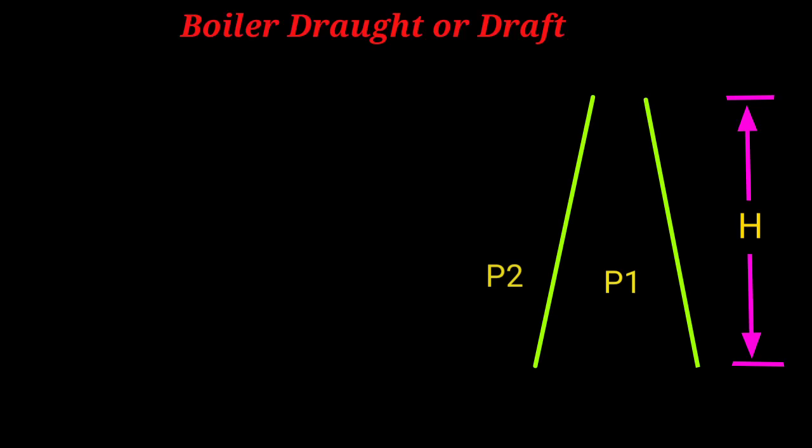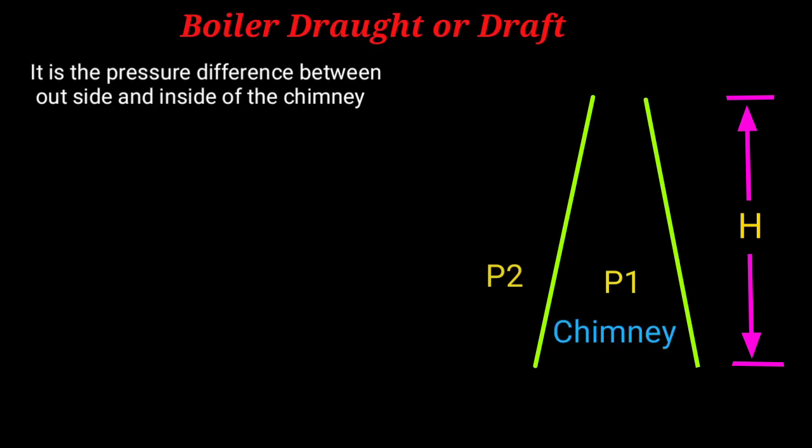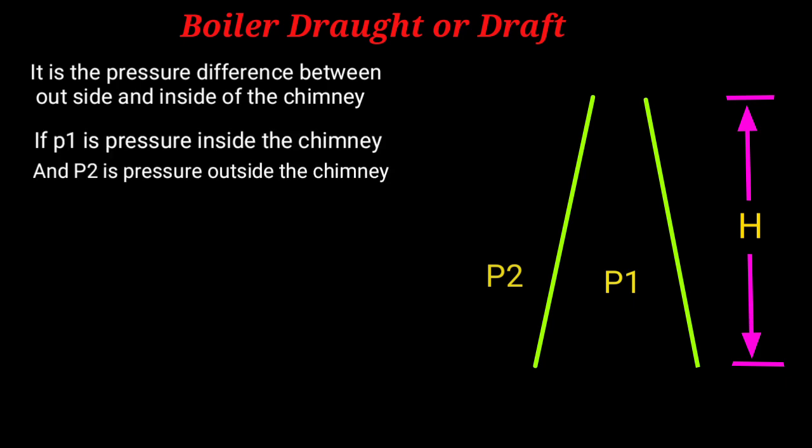Boiler draught or draft. It is the pressure difference between outside and inside of the chimney. If P1 is pressure inside the chimney and P2 is pressure outside the chimney, so draught ΔP equals P2 minus P1.